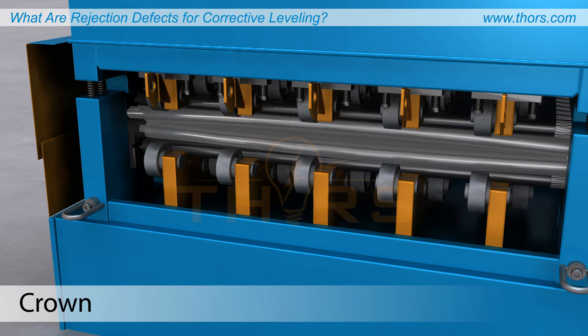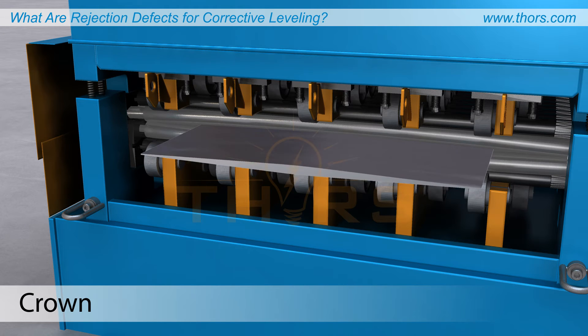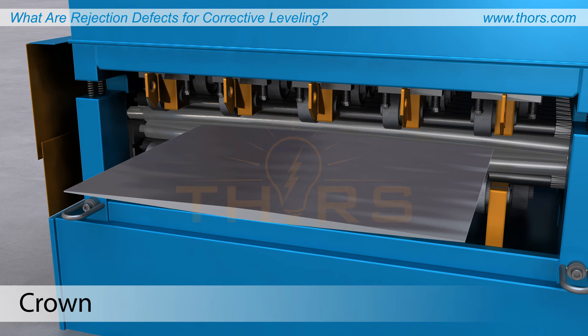Crown is an increased thickness in the center of material compared to the sides and edges. Though leveling can often improve the flatness of material, leveling cannot fix crown.